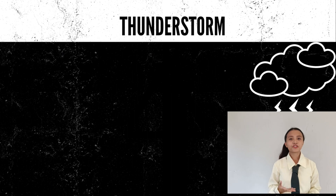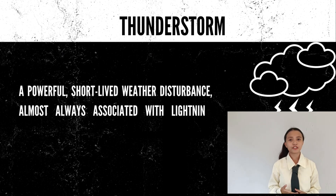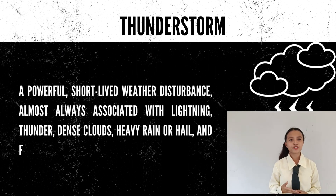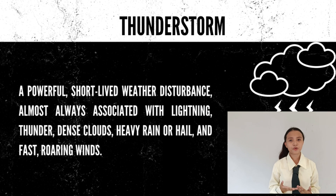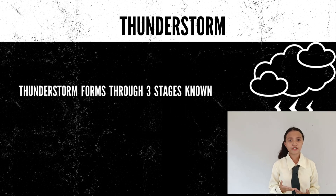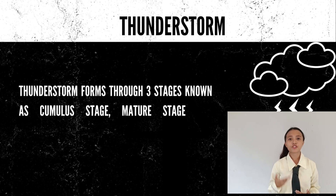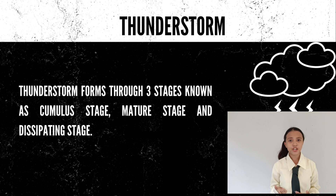Thunderstorm. This is a powerful, short-lived weather disturbance, almost always associated with lightning, thunder, dense clouds, heavy rain, and fast, pouring winds. Thunderstorms form through three stages known as the cumulus stage, mature stage, and dissipating stage.